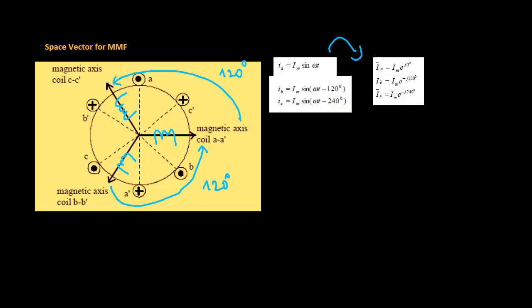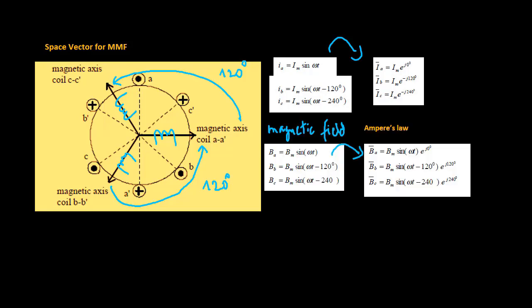When the windings are excited with balanced three phase sinusoidal currents, each phase produces a pulsating sinusoidal field, described by a space vector directed along the winding axis and pointing to where the field is maximum positive.